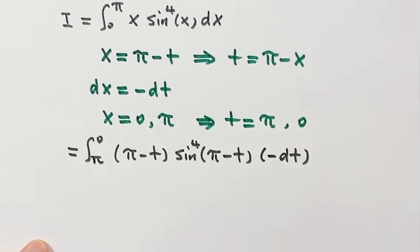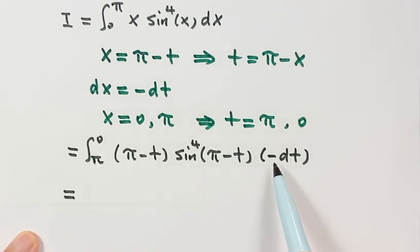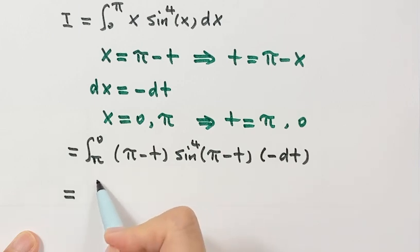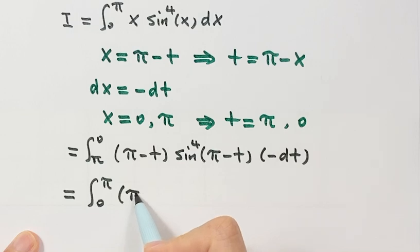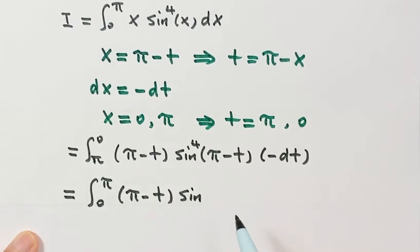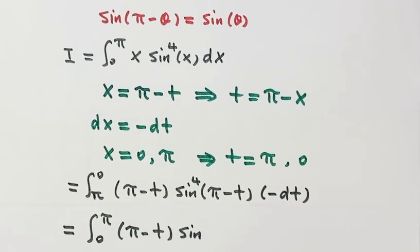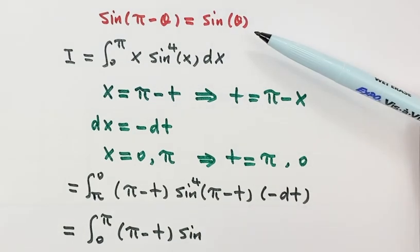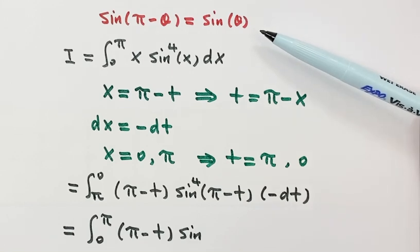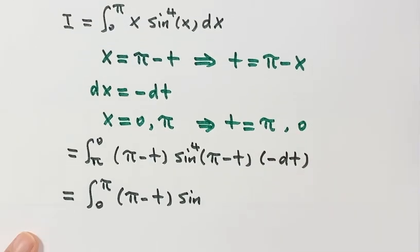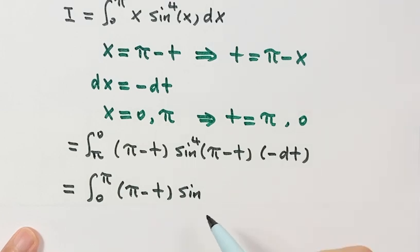Let's simplify. First, let's swap the upper and lower limits because we have a negative sign, giving us limits from 0 to π. Now sine(π minus t), based on the identity, just equals sine t.